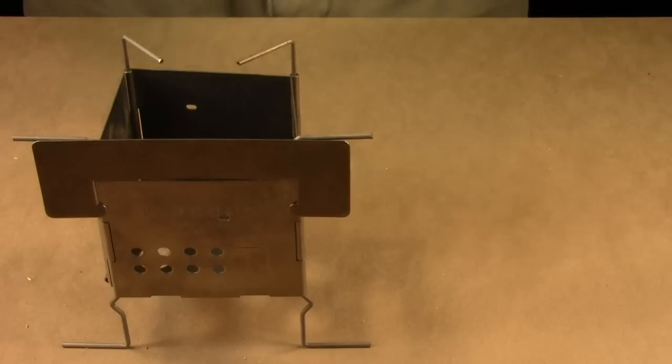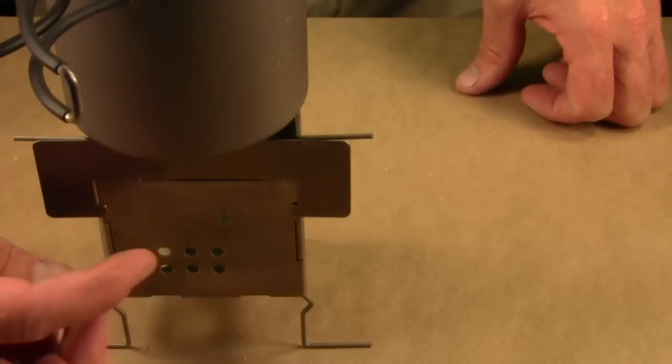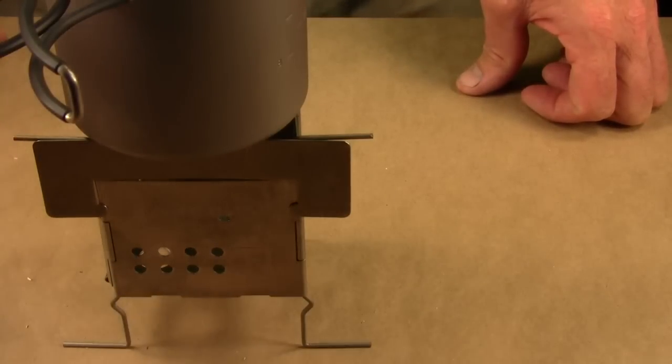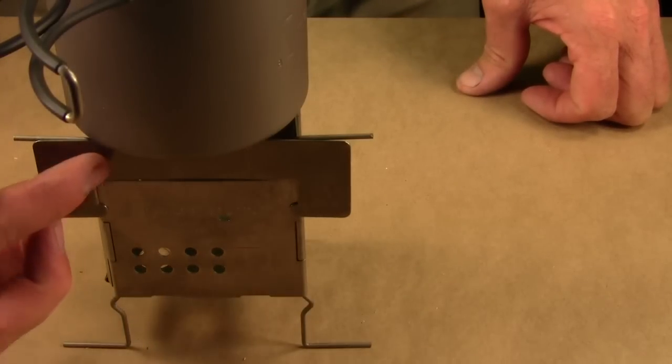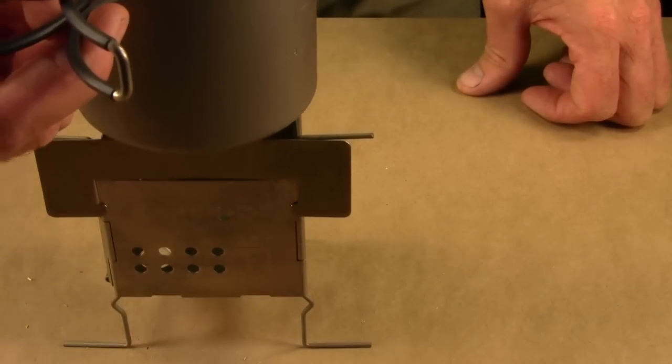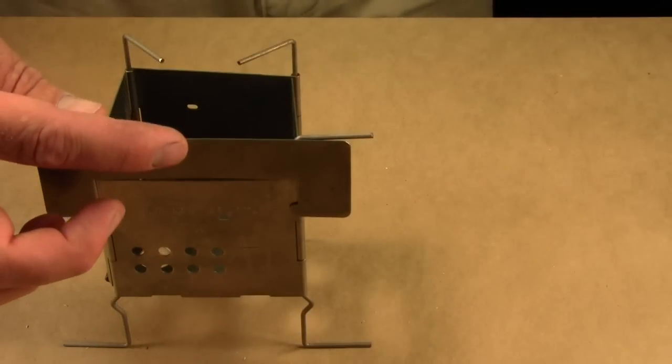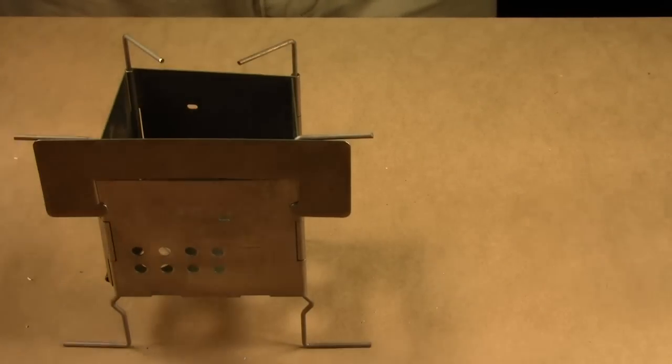And what the flame guard is for, is for two reasons. One, to protect the flame from the breeze. And the other is to protect your pot handles from the flame.